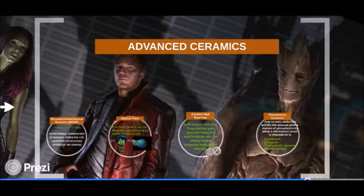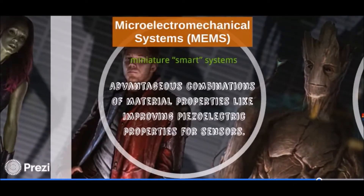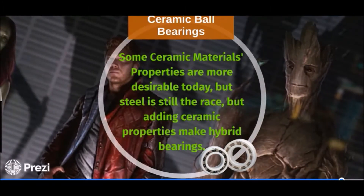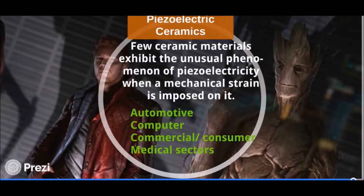Let's go to the last category: advanced ceramics. For MEMS or miniature smart systems, ceramic properties are used for nanotechnology and microtechnology applications. Optical fiber is a thin, flexible fiber with a glass core through which light signals can be sent with very little loss of strength, which is why it is used in communication systems. Ceramic ball bearings are also used, and some ceramics show piezoelectricity, so they are now used in automotive, computer, commercial, consumer, and medical sectors.